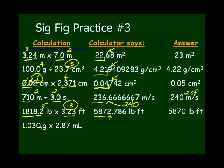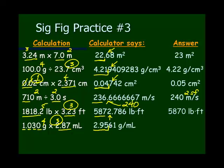For 1.030 grams times 2.87 milliliters: calculator gives the product. Counting sig figs in 1.030: the 1 counts, the 3 counts, the sandwiched zero counts, and the trailing zero with a decimal counts — four significant figures. 2.87 is three significant figures, so three is the least. Keep the first three numbers: the answer is 2.96 grams per milliliter.